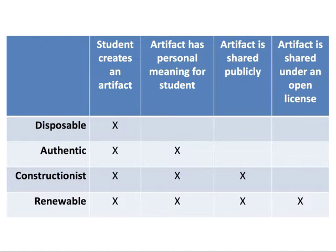We might think about the difference between disposable, authentic, constructionist, and renewable assignments as walking along a pathway: do students actually create something? Does the thing they create have personal meaning for them? Is it going to be shared publicly? And is it going to be available under an open license that grants permission to engage in these 5R activities? That's a renewable assignment — one in which a student creates an artifact that has personal meaning, that they share publicly under an open license.